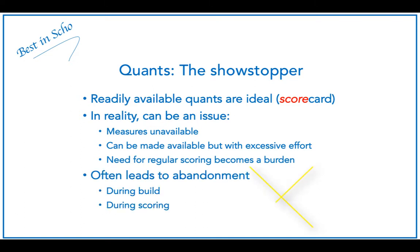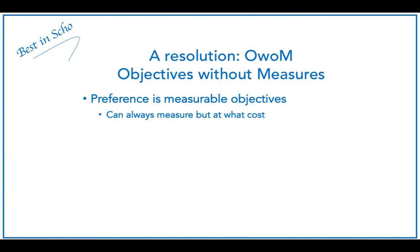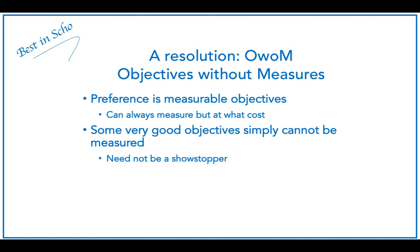Sadly, these realities can often lead to abandonment, either during the scorecard build or because of the work needed during the scoring process. Our preference is always measurable objectives, and in fact we can always get objectives to measure, but sometimes the cost of doing so is absolutely prohibitive. So we can conclude that some very good objectives simply cannot be measured, at least from a practical perspective.